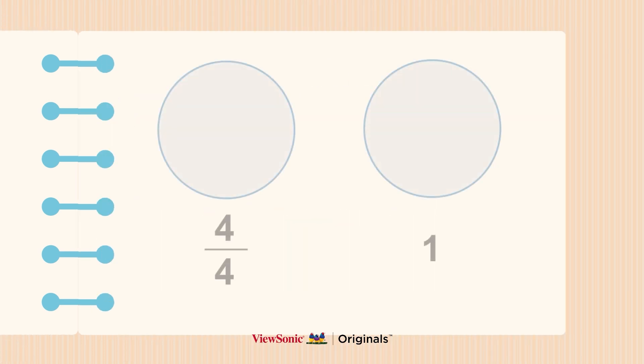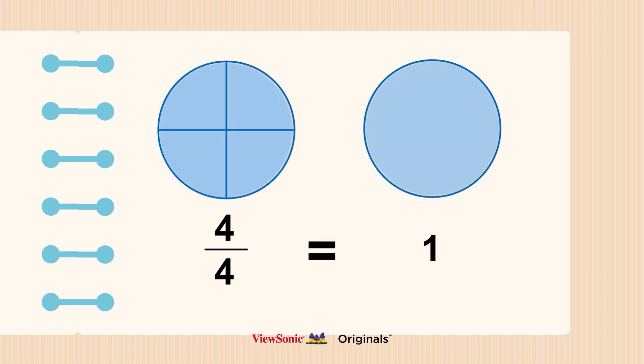Moving on, let's see if four-fourths is equivalent as one. Divide the circle on the left into four equal pieces. We can see that four-fourths equals one.